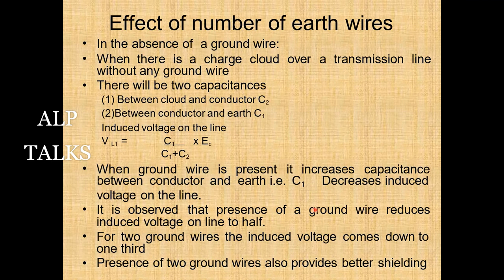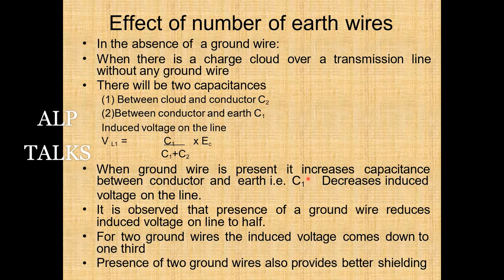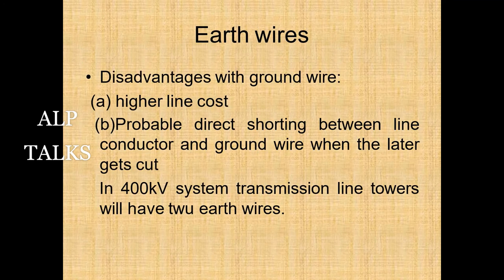Tower footing resistance shall be low, and shielding angle — the angle between the normal passing through the ground wire and the line joining the ground wire and outer conductor support points — shall be 30 degrees for 132 and 220 kV lines and 20 degrees for 400 kV lines. When a charged cloud is over a transmission line without any ground wire, two capacitances exist between cloud and conductors (C1 and C2), giving induced voltage = C1/(C1+C2) × Ec. With a ground wire present, C1 decreases and induced voltage reduces. With two ground wires, individual voltage comes down to one-third, and better shielding angle is also achieved.